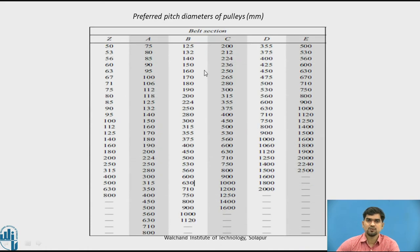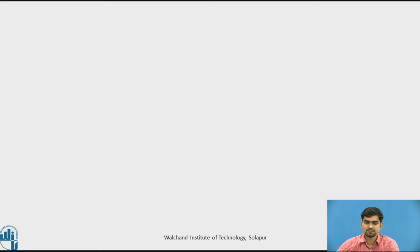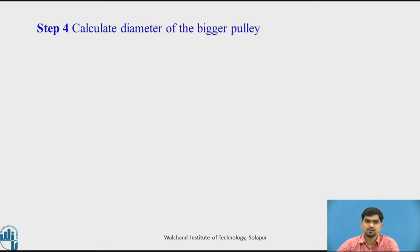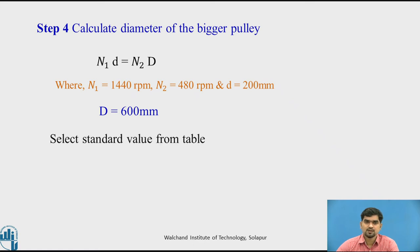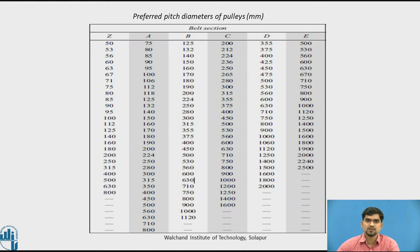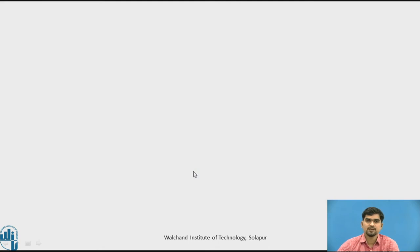We check whether 200 mm for the B section belt is available — yes, it is available. Step 4: calculate the diameter of the bigger pulley. Using the equation n1·d = n2·D, putting in the values of n1, n2, and small d, we get capital D equal to 600 mm. We verify that 600 mm for B section belt is available from the manufacturing data book. So capital D equals 600 mm.